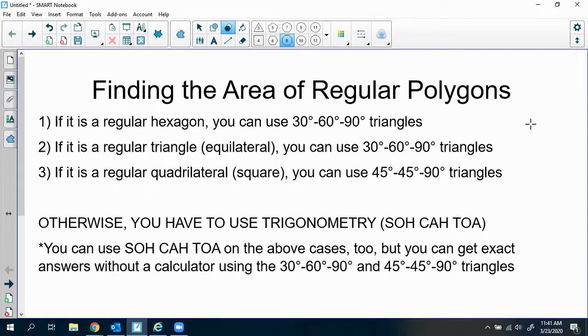Otherwise, you'll have to use SOHCAHTOA or trigonometry. Now you can use SOHCAHTOA on the above cases, but in order to get exact answers, if it asks for an exact answer on a quiz or test, you will have to use 30-60-90 or 45-45-90 in these three cases. Otherwise, you will use SOHCAHTOA.